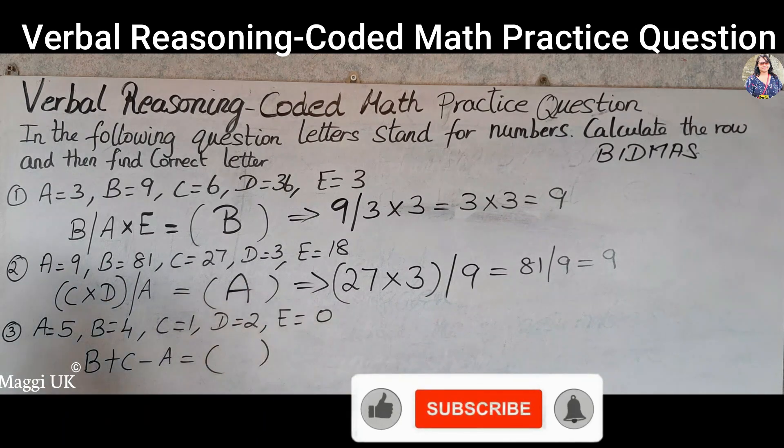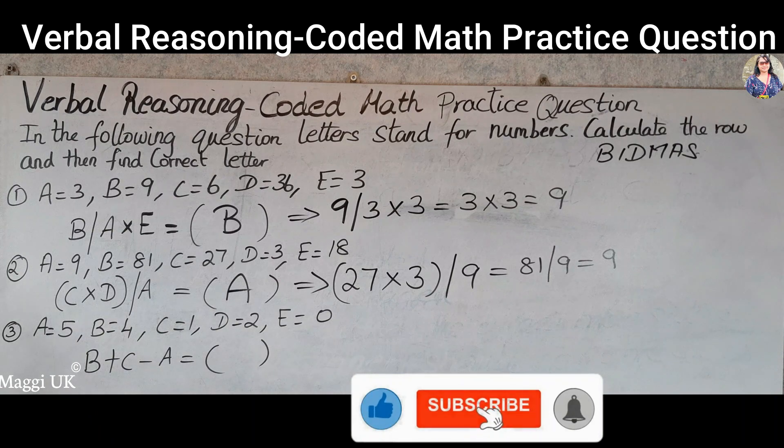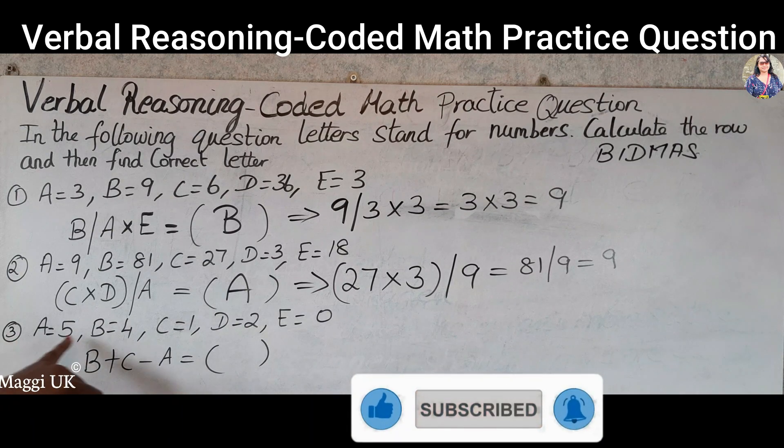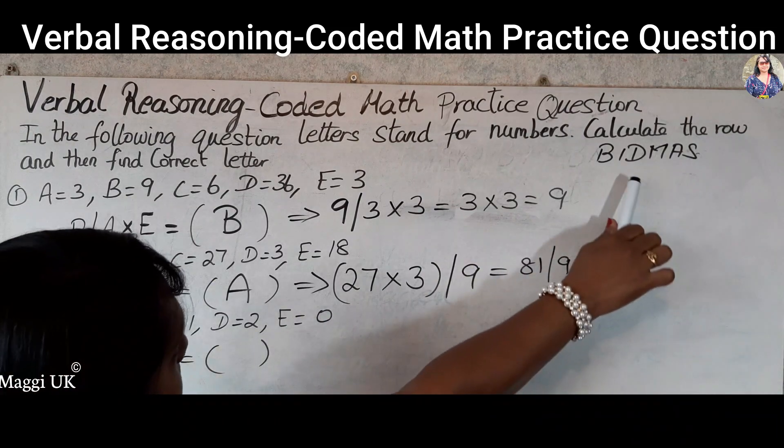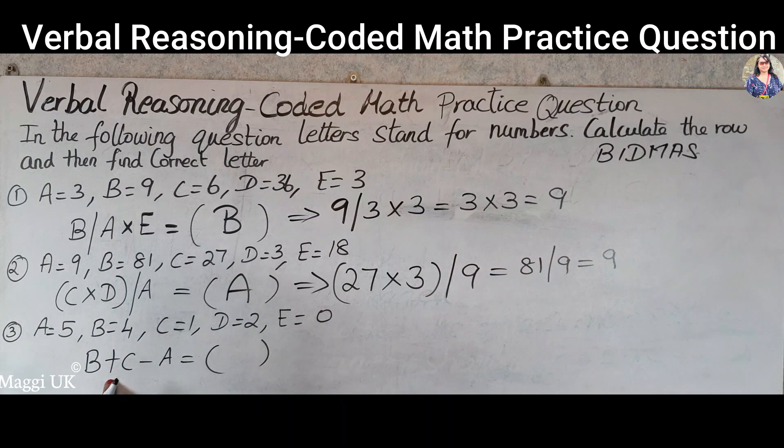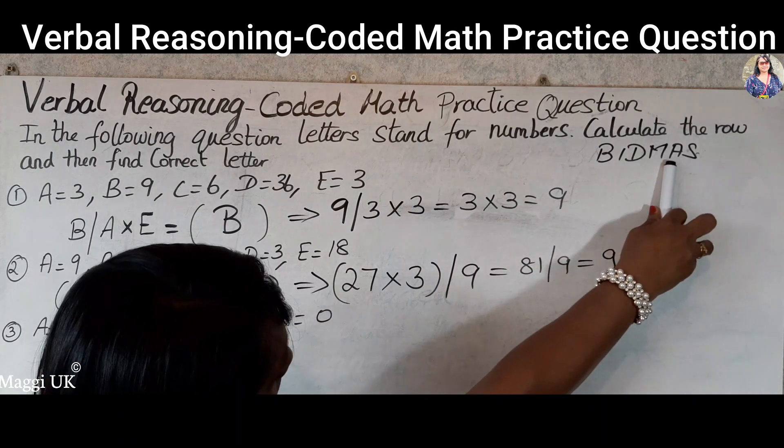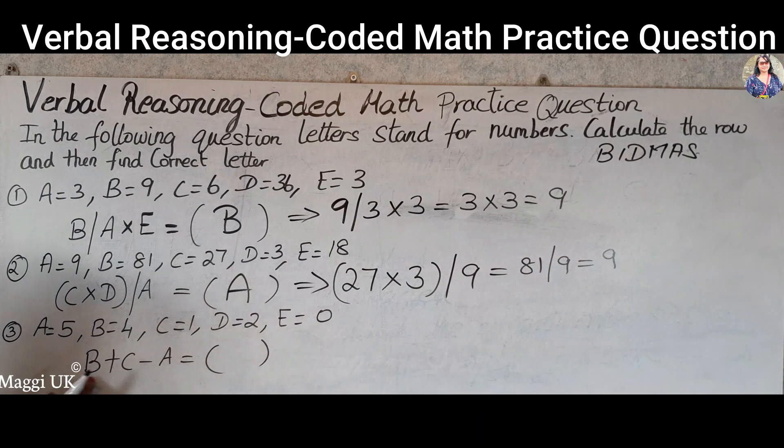So the last one, we have given again some different values for each letter. We need to find B plus C minus A. So this time using the BIDMAS rule, you have adding and subtraction. Again, adding comes first and then subtraction.